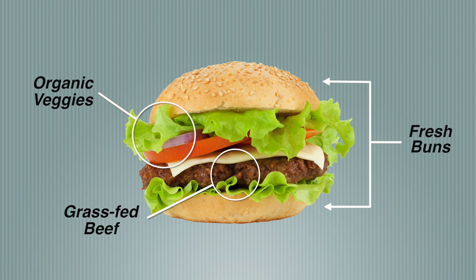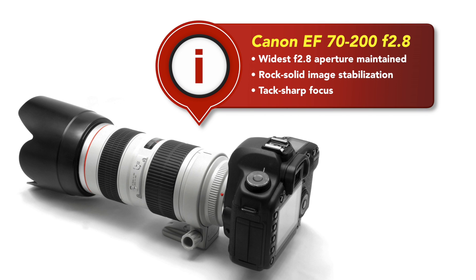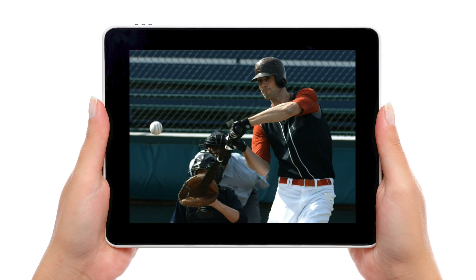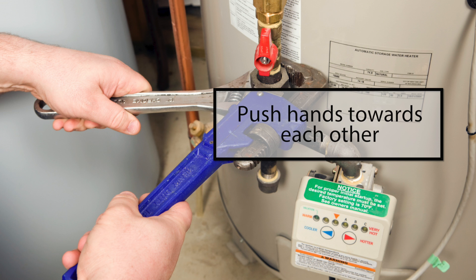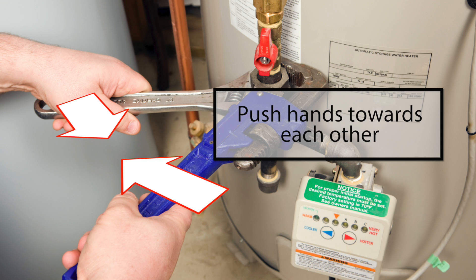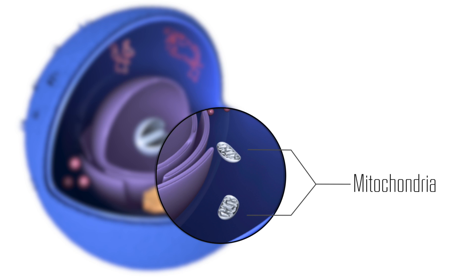Ripple Callouts is the industry-leading Final Cut Pro X plugin for annotating video. For years, we've helped editors direct their audience's attention in promotional, documentary, and instructional videos.